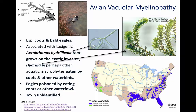Avian vacuolar myelinopathy is a disorder that often kills coots and has killed predatory birds like bald eagles that feed on coots. It's associated with a cyanobacteria that grows on an exotic invasive water plant called hydrilla, and may also grow on other macrophyte plants. The coots are directly poisoned by eating those plants with the cyanobacteria on board. However, the specific toxin remains to be identified — this is another area needing additional research.